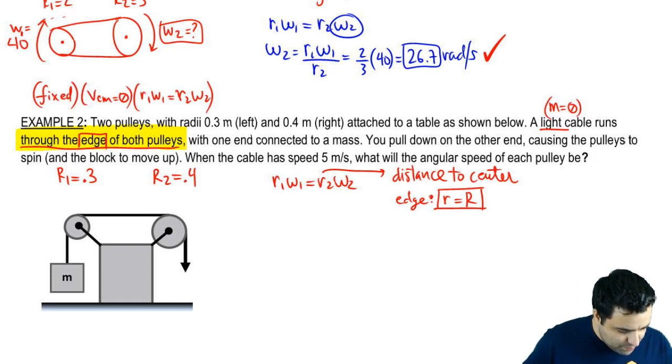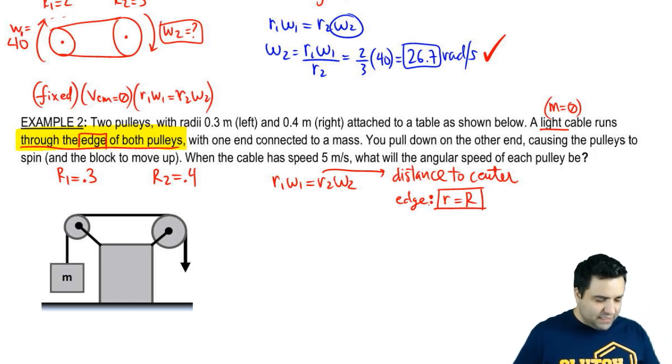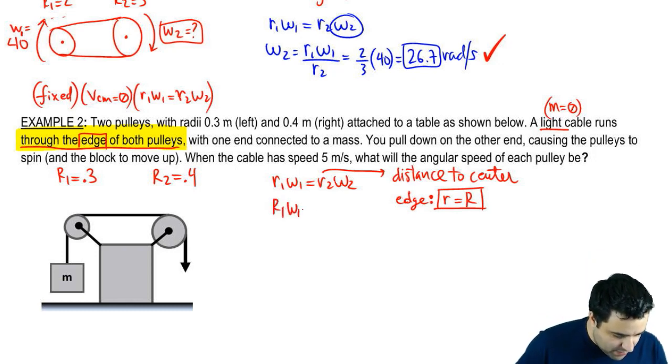So if you're not sure, you can pretty safely guess that that's what it is, but the problem should tell you. So that means I'm going to have big R1 omega 1 equals big R2 omega 2.